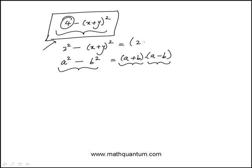This would be 2 plus (x plus y), because this would be b, and that's a, and then it would be 2 minus (x plus y). So these would be the two factors.